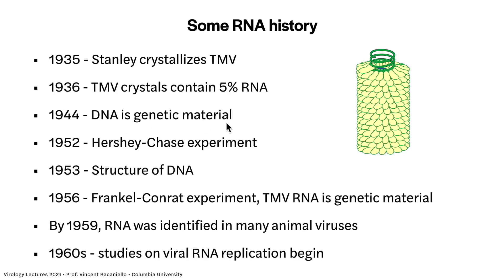In 1944, DNA is shown to be genetic material. In 1952, the Hershey-Chase experiment showed that the DNA of a bacteriophage is the genetic material. The structure of DNA was solved in 1953 — a banner year for science. In 1956, the Fraenkel-Conrat experiment showed that tobacco mosaic virus RNA is genetic material. And by 1959, lots of RNA viruses were discovered. In the 1960s, people asked: how does this RNA reproduce? That's the topic of today's discussion.